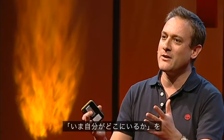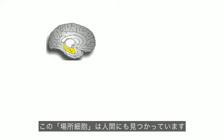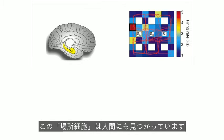So together they form a map for the rest of the brain, telling the brain continually where am I now within my environment? Place cells are also being recorded in humans.